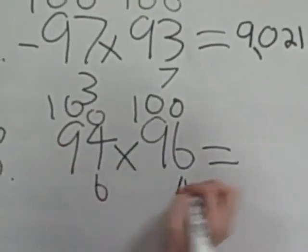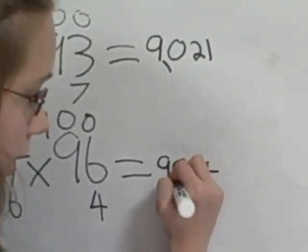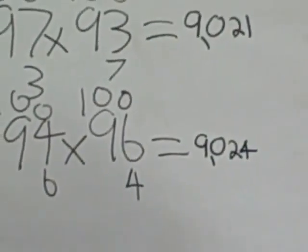96 minus 6 or 94 minus 4 is 90. 6 times 4 is 24. And that's how you do a 90s trick. Good job Olivia.